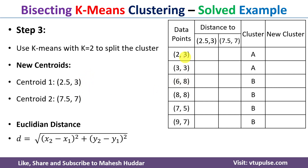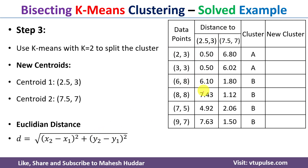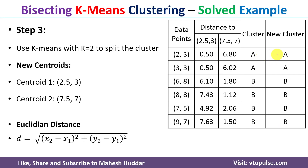With the new centroids, we recalculate the Euclidean distances from each data point to both centroids. We again assign each point to the cluster with the minimum distance. For example, 0.5 is the minimum for the first two points so they go to cluster A, and 1.8 is the minimum for the next point so it goes to cluster B. Comparing the previous and current assignments, there is no change, meaning k-means has converged.